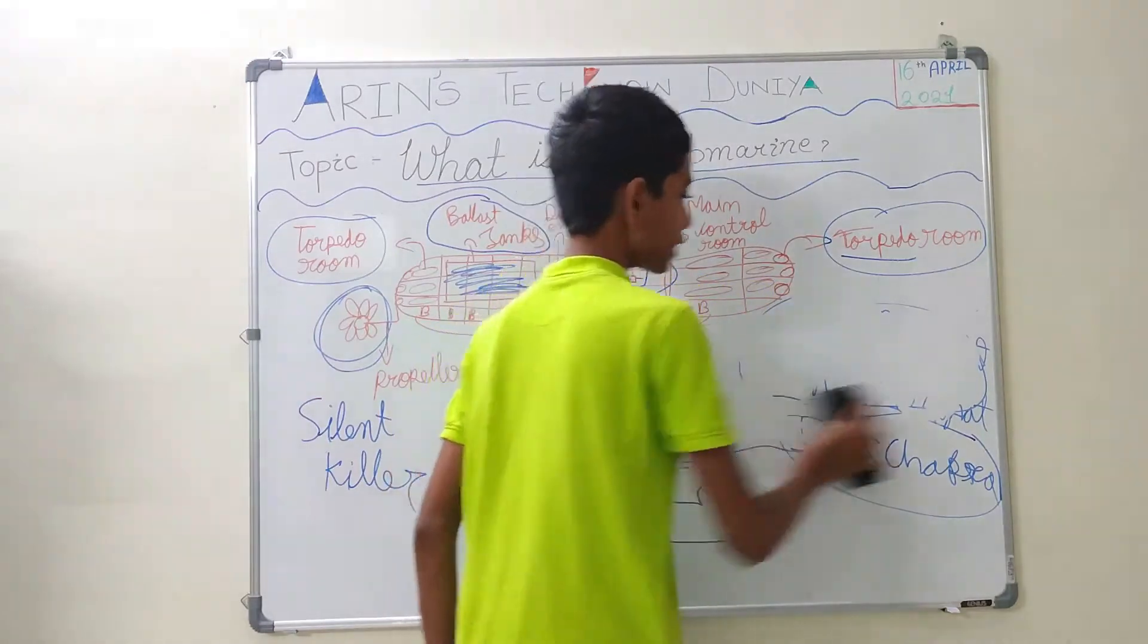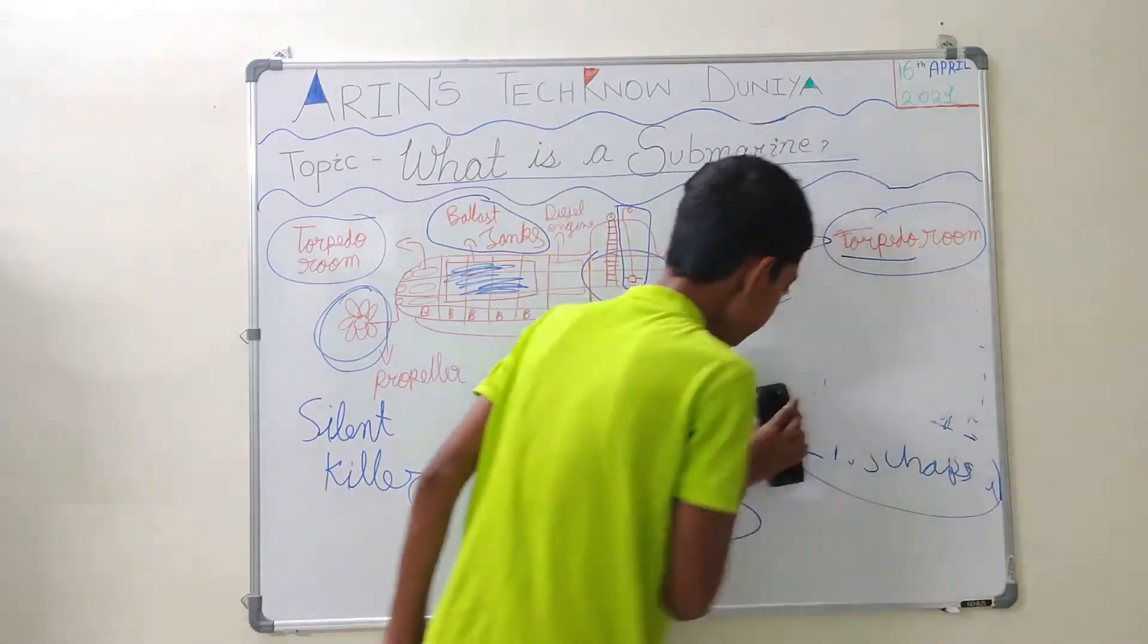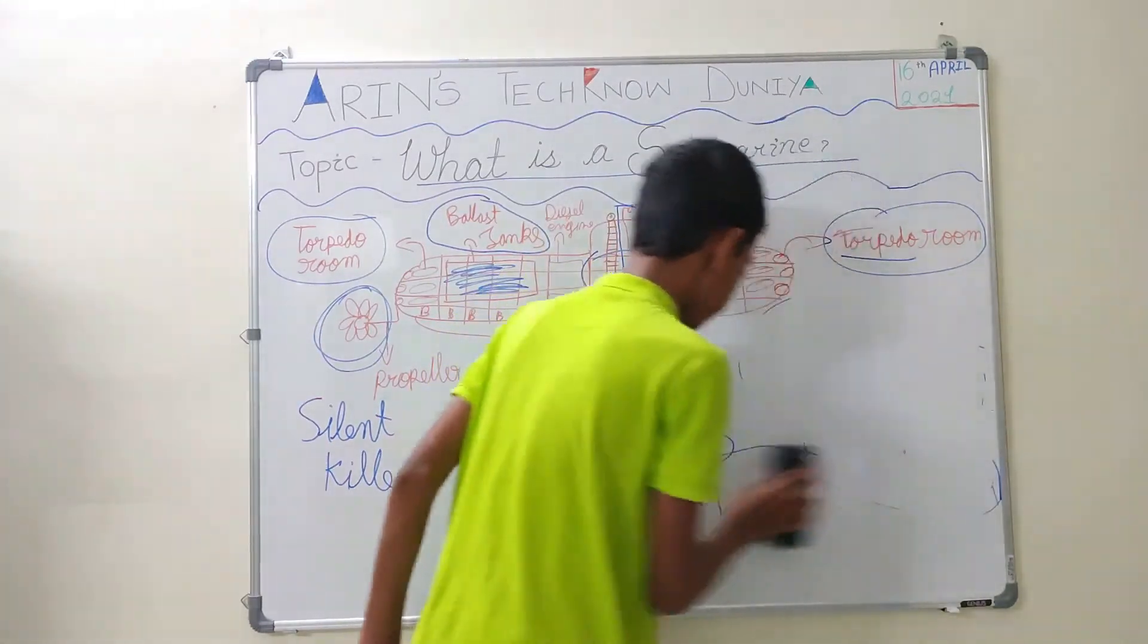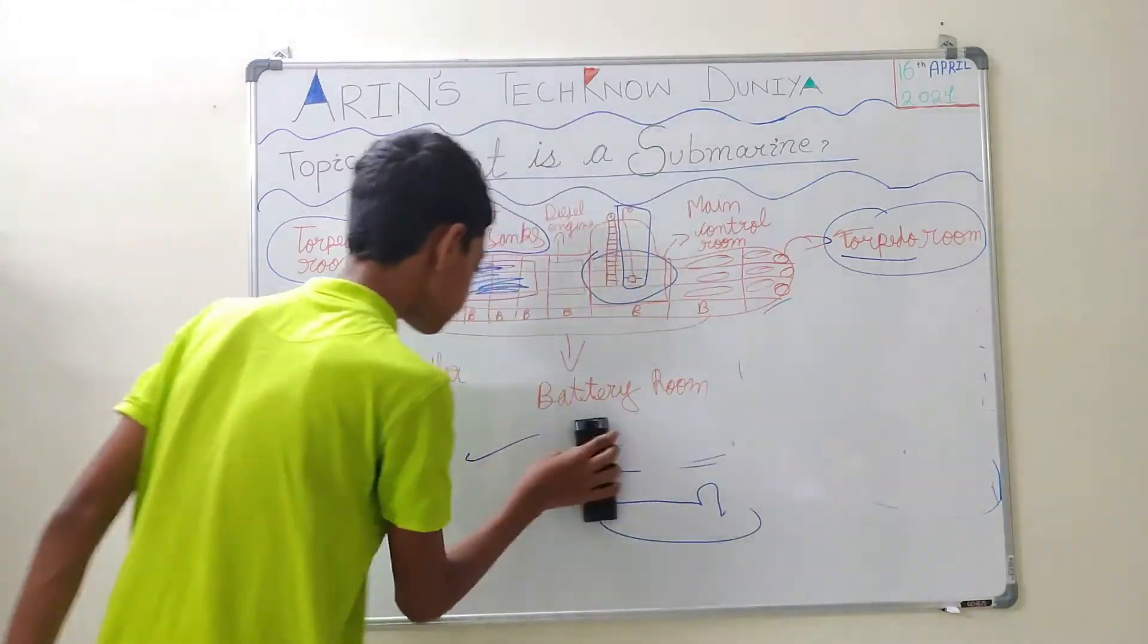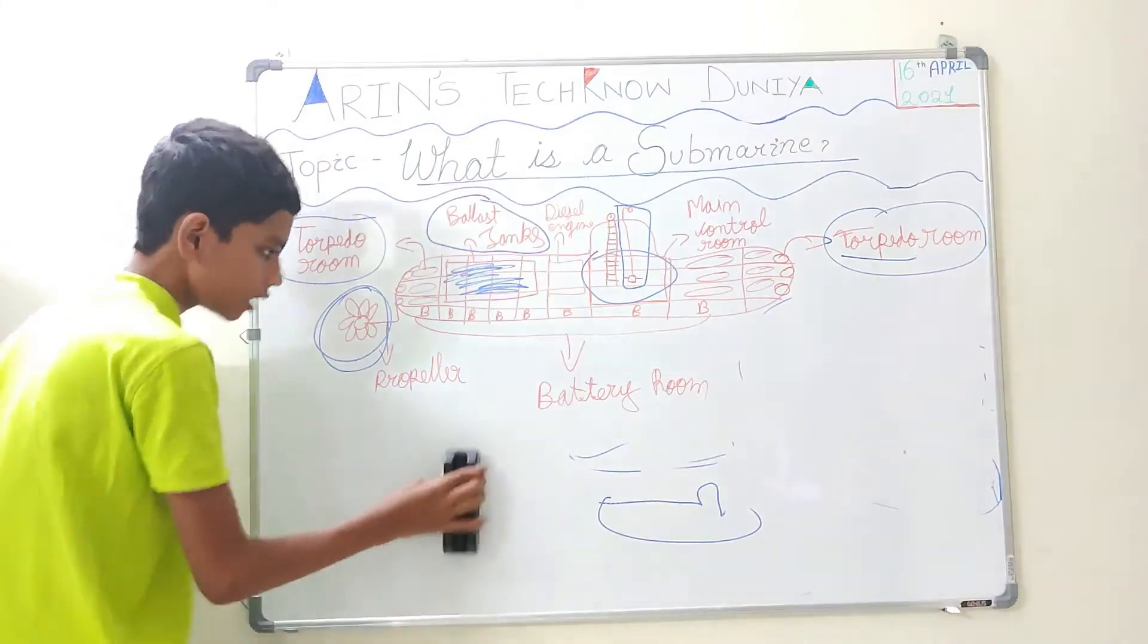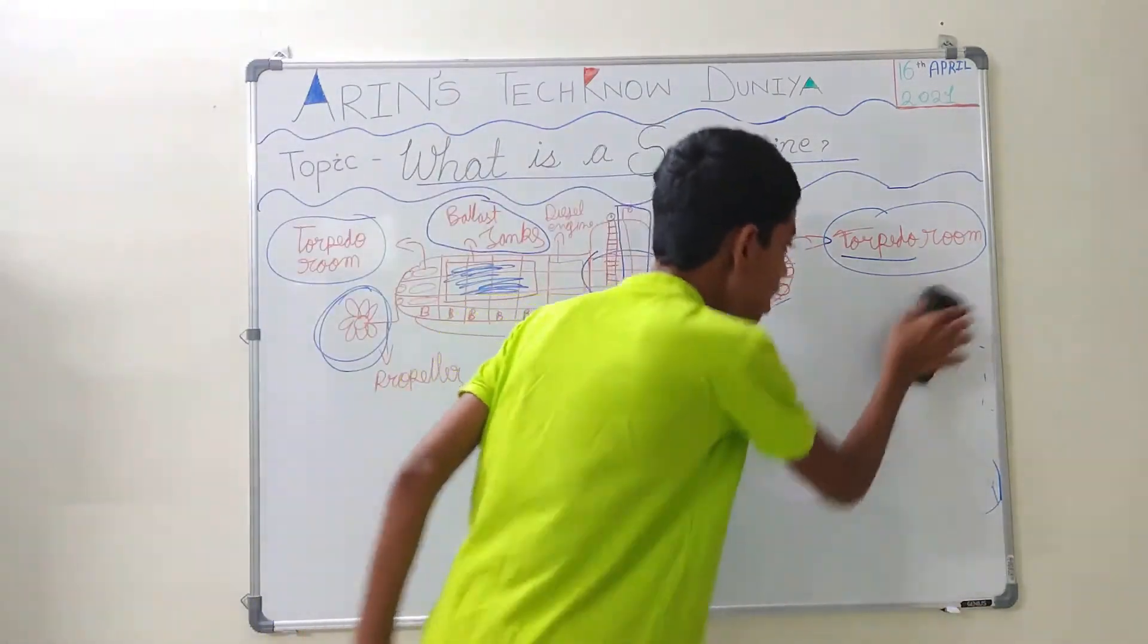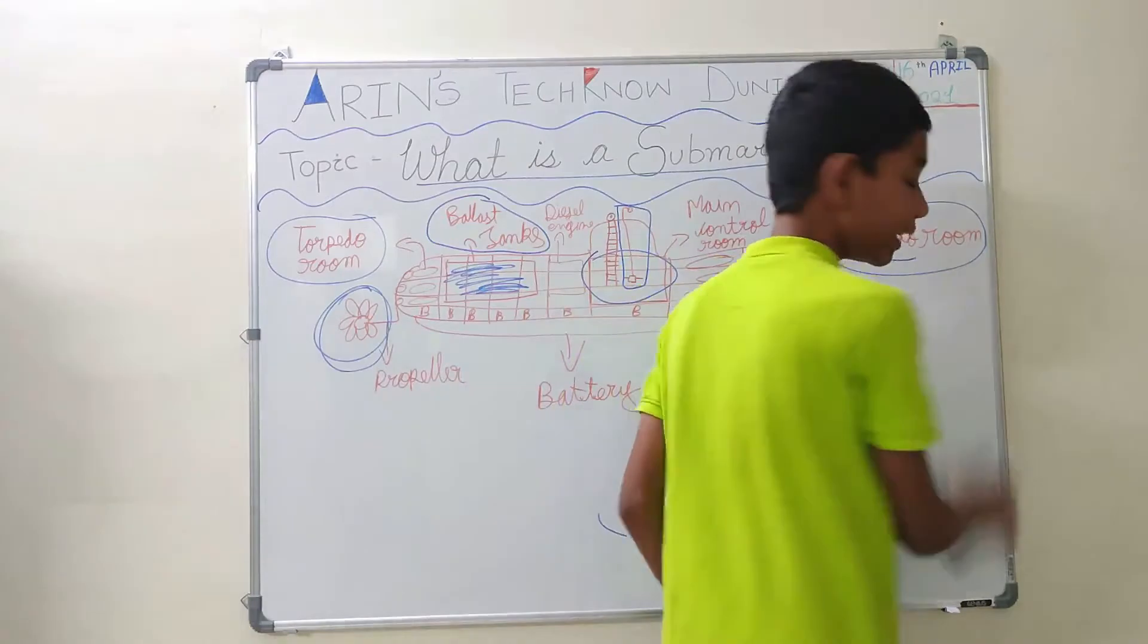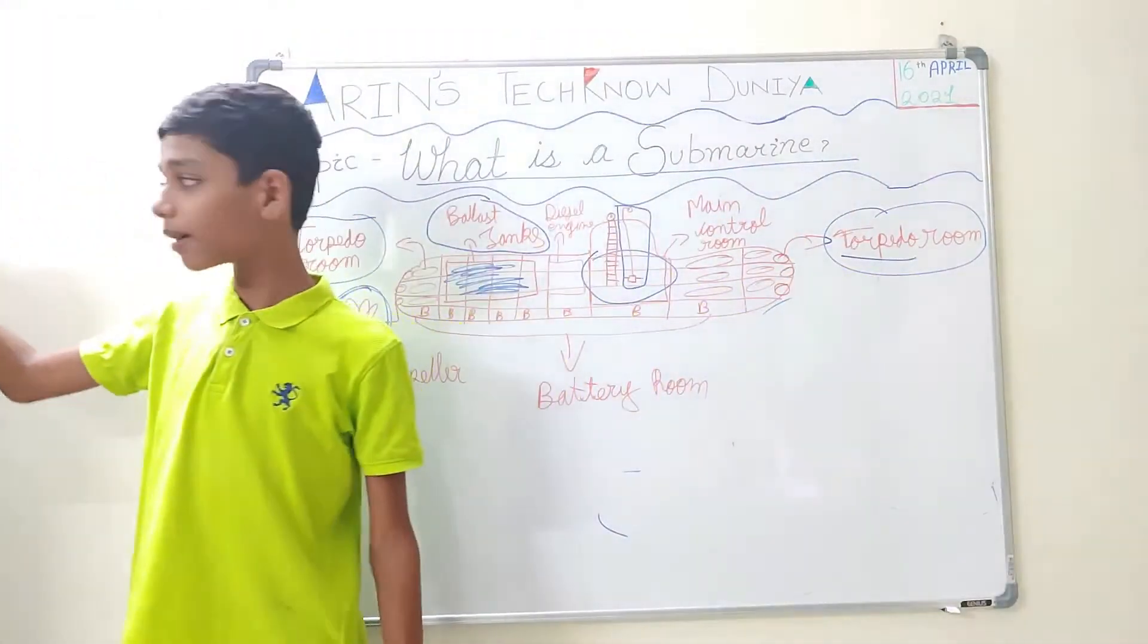Now I am going to tell you what are the types of submarines. Currently, Indian Navy has 20 to 32 submarines. But now it will almost go till 40 by 2030 to 2040.